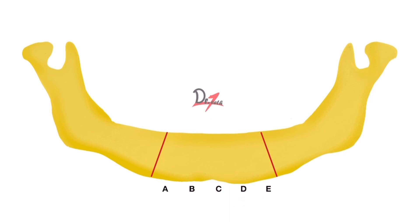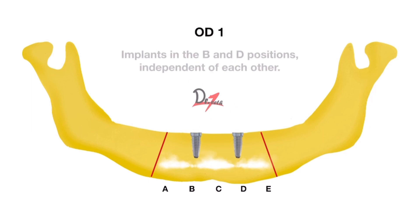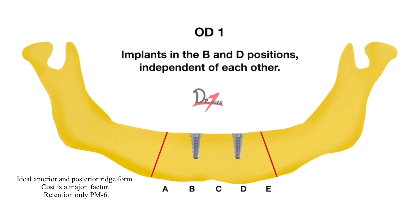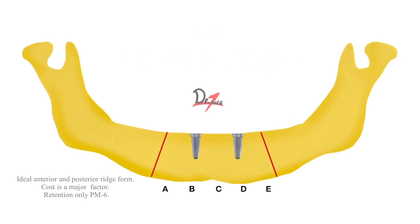There are basically five treatment options for the mandibular implant overdenture. The first one is OD1 — here the implants are in the B and D position and these are independent of each other, meaning they haven't been joined together.